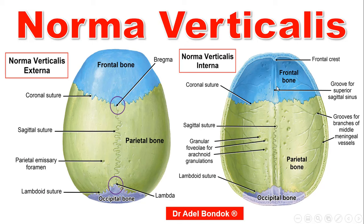So, in summary for Norma verticalis: externally, the bones are frontal anteriorly, occipital posteriorly, and parietal on each side. Sutures: coronal, sagittal, and lambdoid. Bony landmarks: bregma, lambda, parietal foramen, and parietal eminence as the site of ossification. Internally: groove for the superior sagittal sinus, frontal crest, grooves for the middle meningeal vessels, and granular foveoli made by arachnoid granulations.